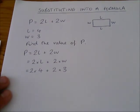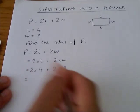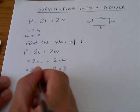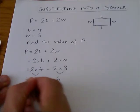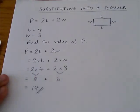Now it's just a matter of using the order of operations. I've got to get this right. So we're going to do the 2 times 4, I'm going to do the 2 times 3, and add them together, which gives the answer 14.